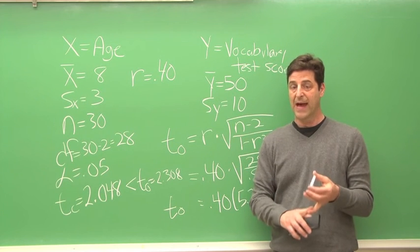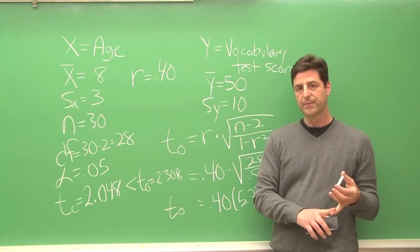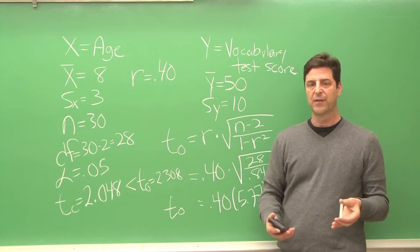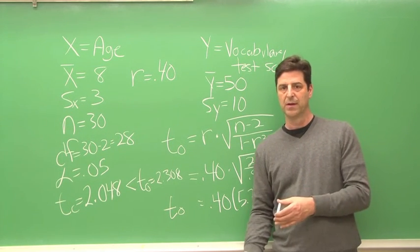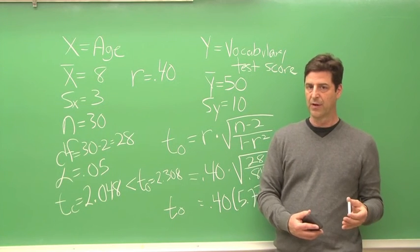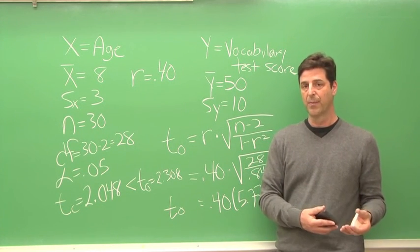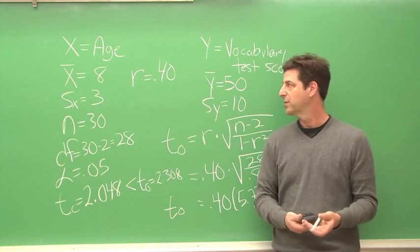And with that, we can make a conclusion about the population. In the population, there's a significant correlation between age and vocabulary test scores. As age increases, vocabulary test scores go up on average in the population.